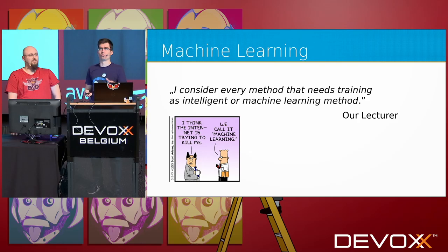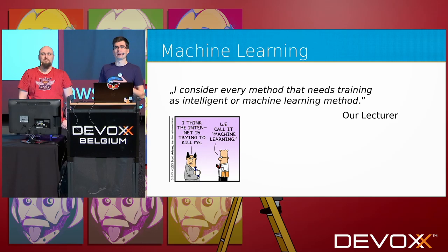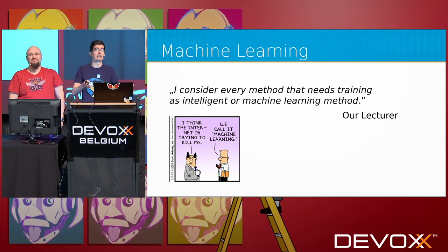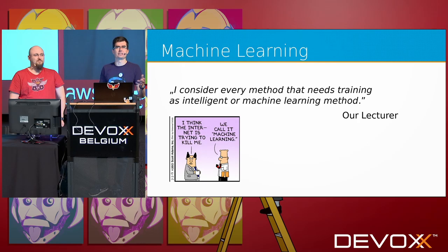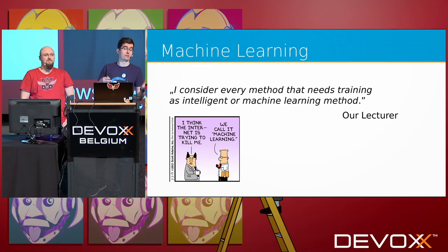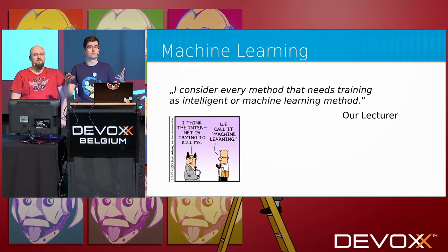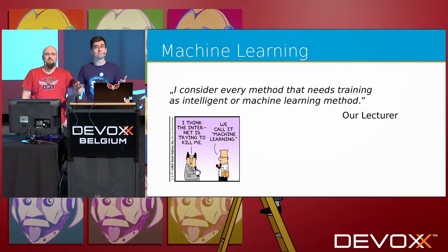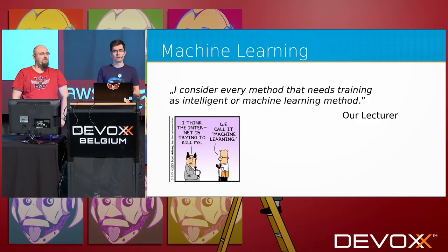The second definition comes from one of our lecturers. When we were studying, we had to implement intelligent methods and asked our lecturer what it means for a method to be intelligent. He said he considered every method that needs some kind of training as an intelligent or machine learning method, using the intuition that people and animals are considered intelligent because we learn how to solve problems and master tasks through learning.